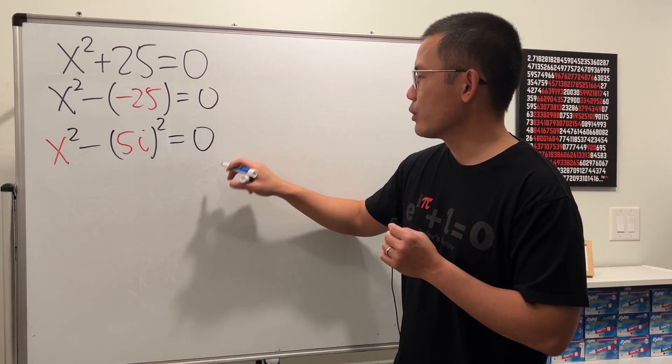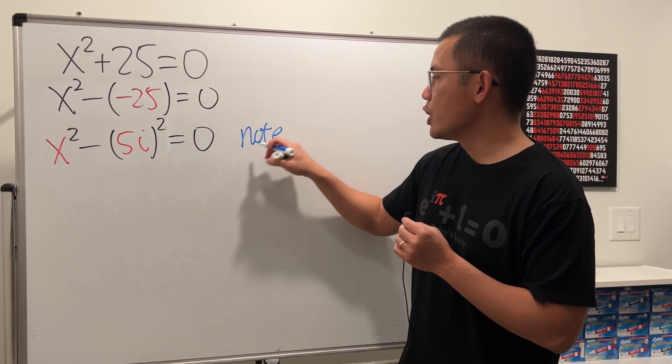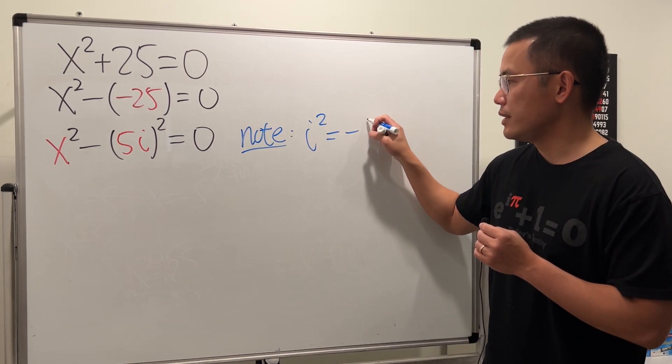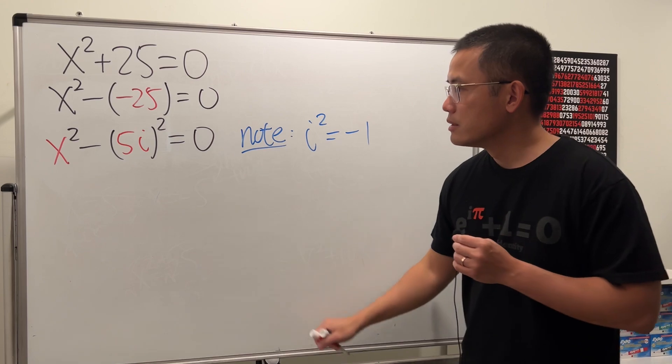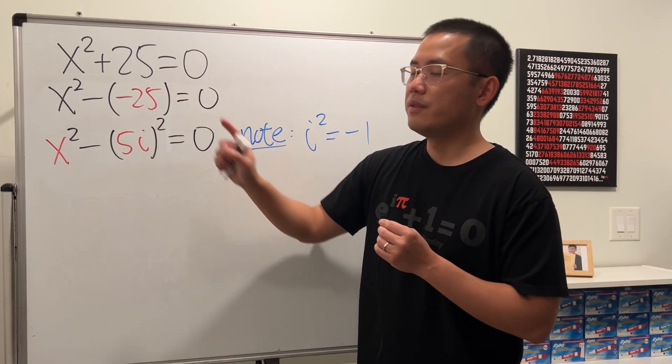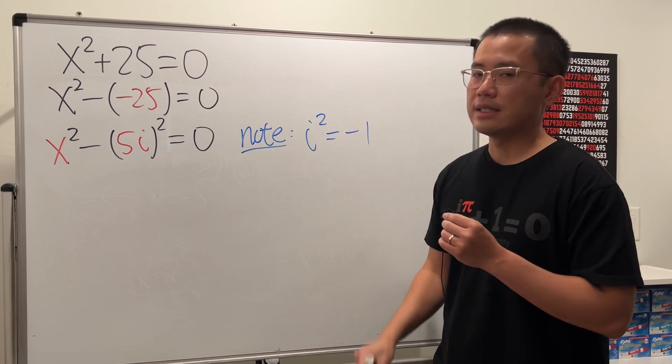Why though? Well, firstly, I will just make a note that i is the imaginary unit, so that i² gives you -1. So i² will give us the negative, and then 5² will give us the 25. So that's how we are going to do it.